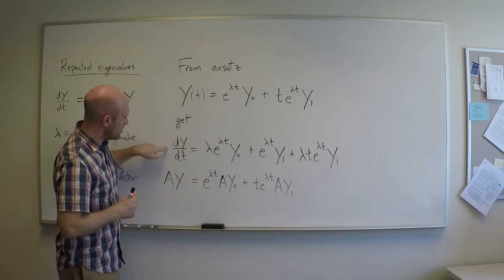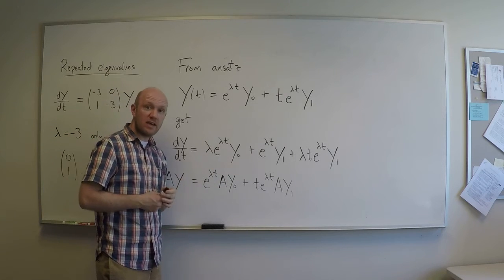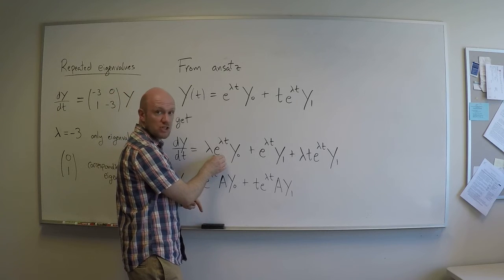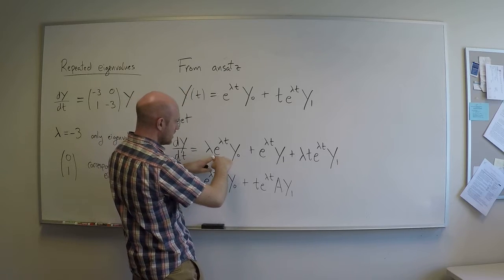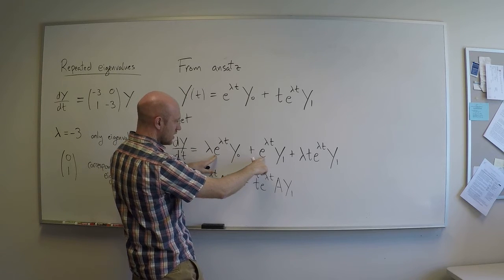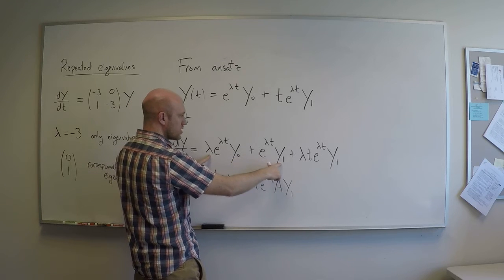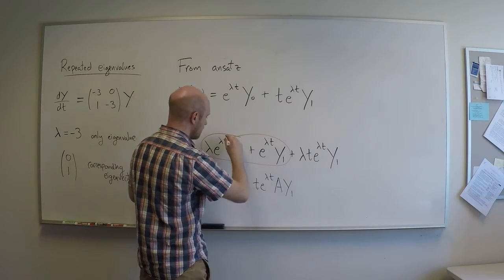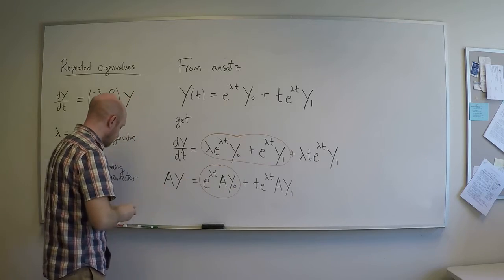Now, if dy/dt is going to be equal to Ay, that needs to be true for all values of t. So in particular, the linearly independent functions must have equal coefficients. So in other words, I have e^(λt). Here's another e^(λt). So the coefficient of e^(λt) is λy0 plus y1. So in other words, these two parts, right here, must equal the part that has an e^(λt) here. Those two parts must be equal.